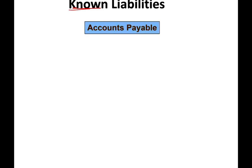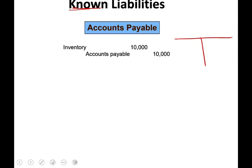For example, accounts payable is a known liability. When you have accounts payable, you know how much you're going to be paying, to whom, and when. The best way to illustrate accounts payable is to work an example. Let's assume we purchased inventory for $10,000 — we debit inventory and we credit accounts payable. Liabilities have a credit balance. Looking at accounts payable from a T-account perspective, it will have a credit balance of $10,000.